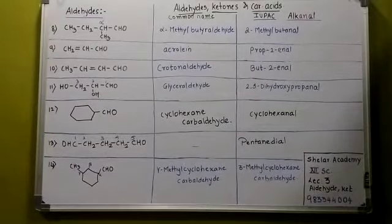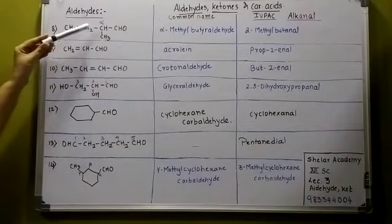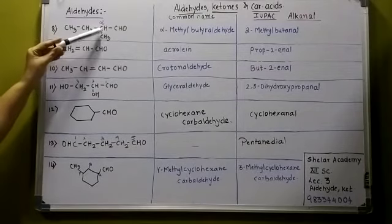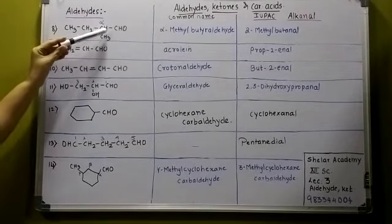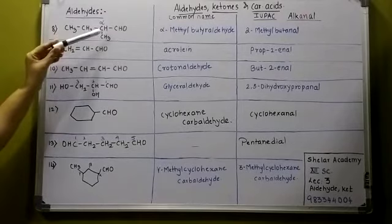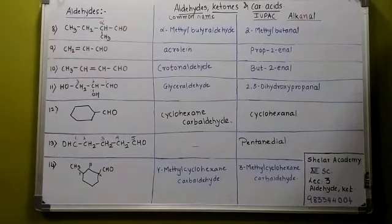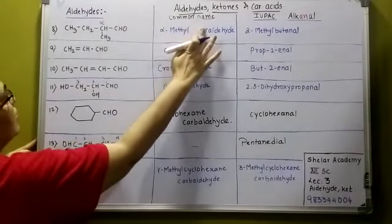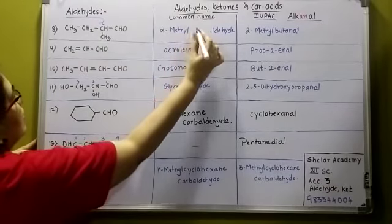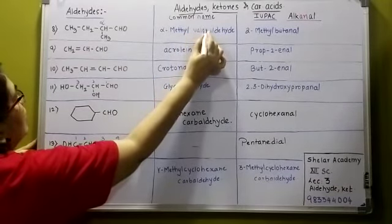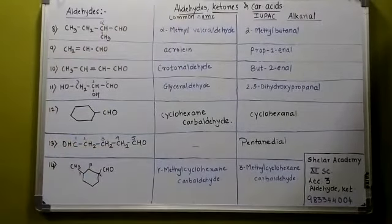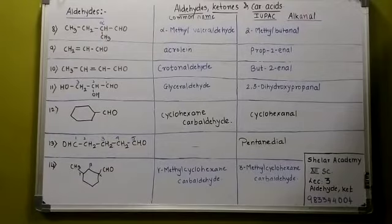Lecture No. 3. Let us see the nomenclature of the aldehydes. The very first — see this is the functional group attached to the chain. This becomes alpha. So it is alpha-methyl. Counting 1, 2, 3, 4, 5 — it should be valeraldehyde. So the common name of the compound is alpha-methyl valeraldehyde.